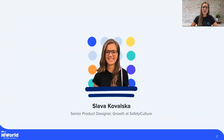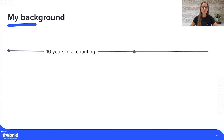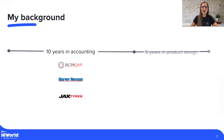A little bit about me. I'm a senior product designer, growth at Safety Culture. As a growth designer, my job is to design experiments to connect our users to product value, as well as uncover more opportunities to improve our products. I come from an accounting background where I spent almost a decade working for a few large and small enterprise companies before I transitioned into product design. I started my design journey designing and validating product MVPs, then moved into product growth where I've been focusing on user onboarding.